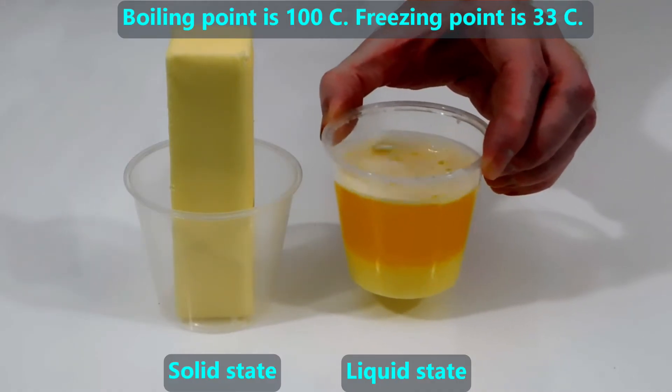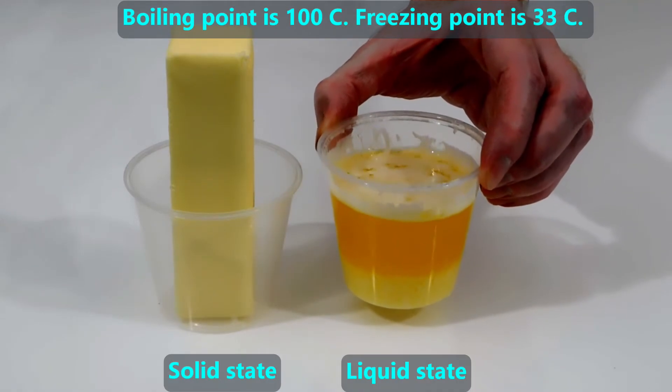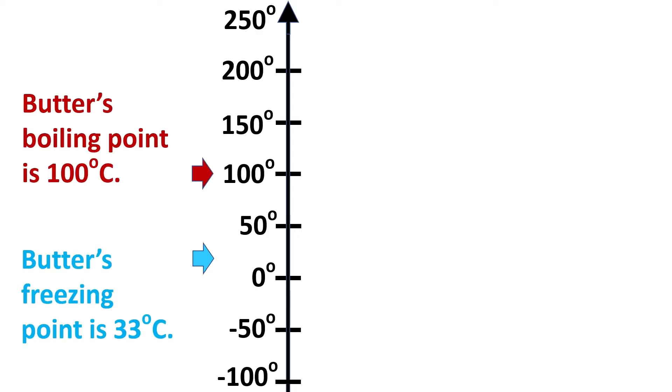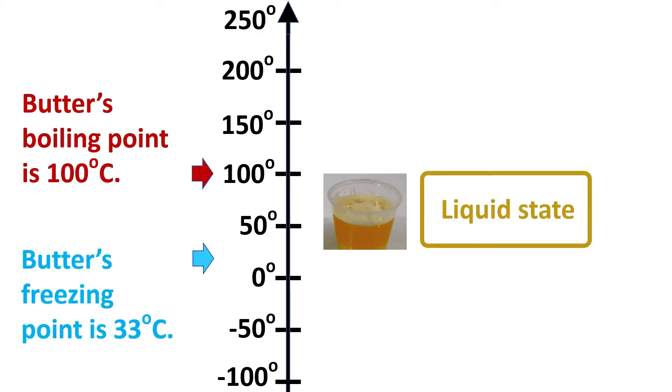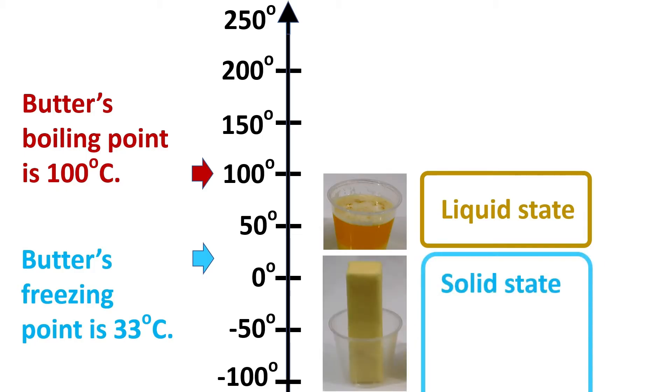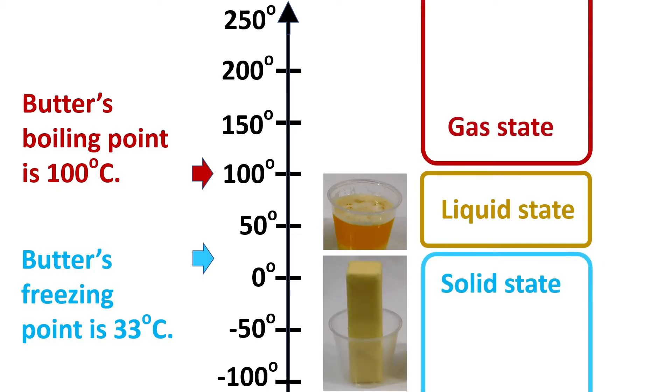Here is butter in two states, and we are given the value of its boiling point and freezing point. To diagram its states, we again draw a vertical number line to represent its temperatures, making sure that the smaller numbers are close to zero and the larger numbers are farther from zero. All the negative signs are below the number zero. Then we make marks where the boiling point and freezing points are. The state between those marks is the liquid state. The state below the freezing point is the solid state, and the state above the boiling point is the gas state.